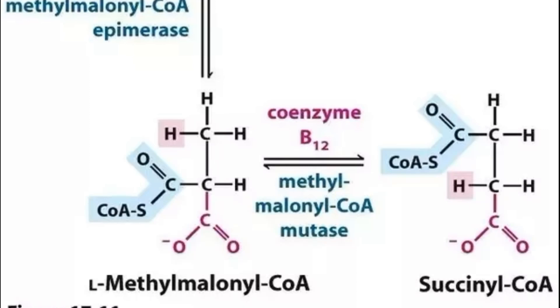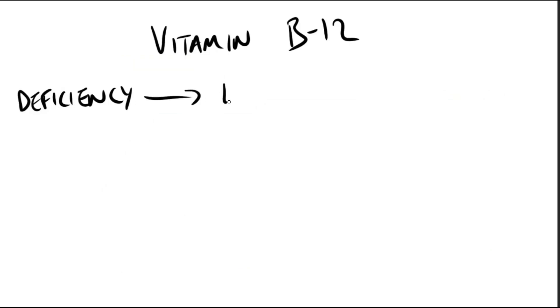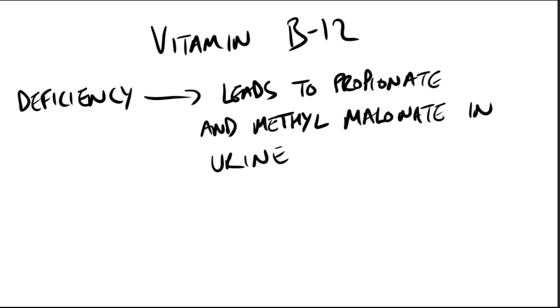Methylmalonyl coenzyme A mutase requires a coenzyme form of vitamin B12, also known as deoxyadenosyl cobalamin, for its action. In the deficiency of this vitamin, both propionate and methylmalonyl are excreted in the urine. Okay guys, that's it for this video. I'll see you in the next one. Take care, bye.